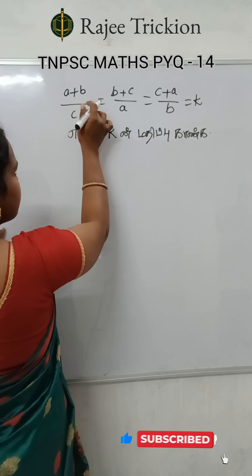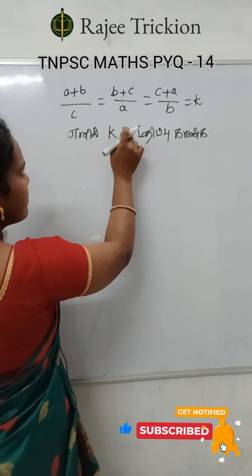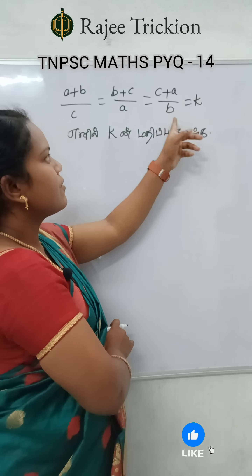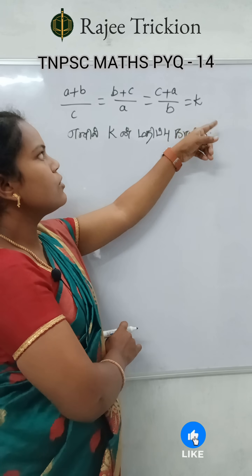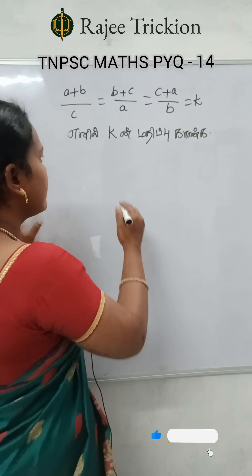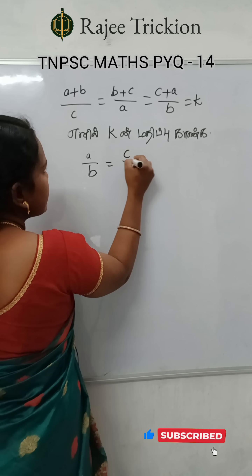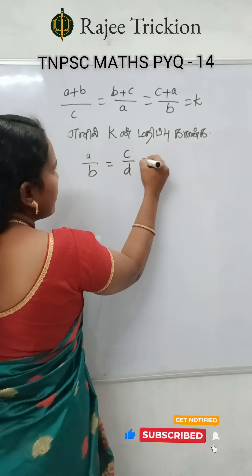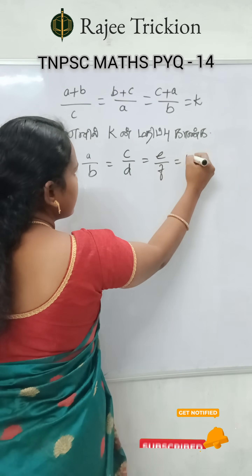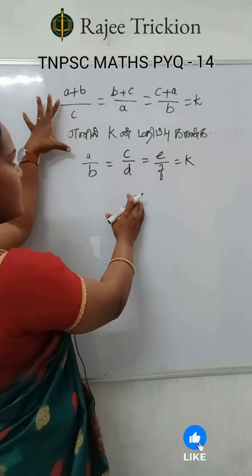So, first, how do we go to A plus B divided by C, equal to B plus C divided by A, equal to C plus A divided by B, equal to K? Here is a property: A by B equal to C by D equal to E by F equal to K. So, in this format, we have this sum.